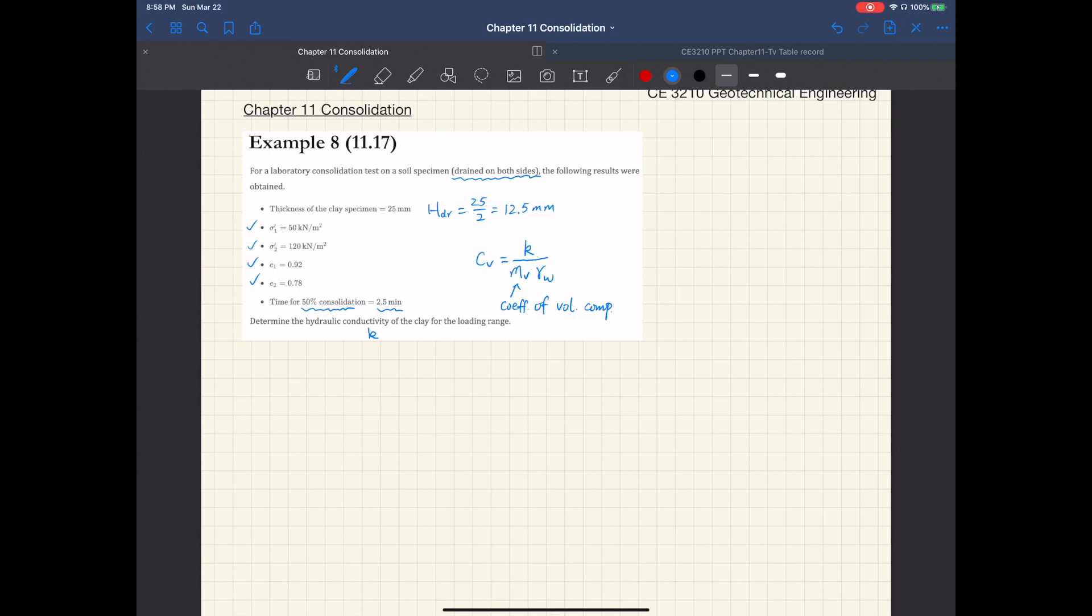First, from this consolidation test result, we can figure out the coefficient of consolidation. The way to do it is to make use of this 50 percent degree consolidation and then use Table 11.7 to find the corresponding t sub v.